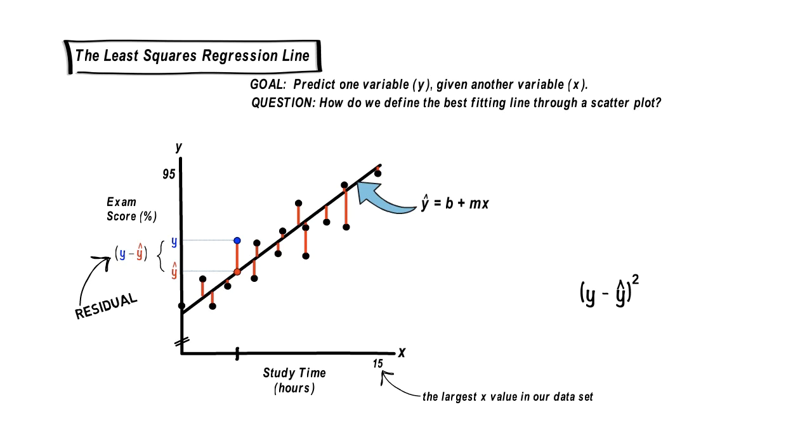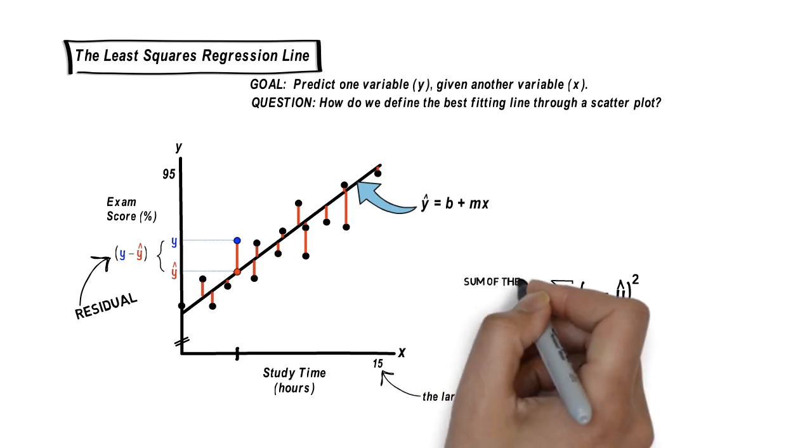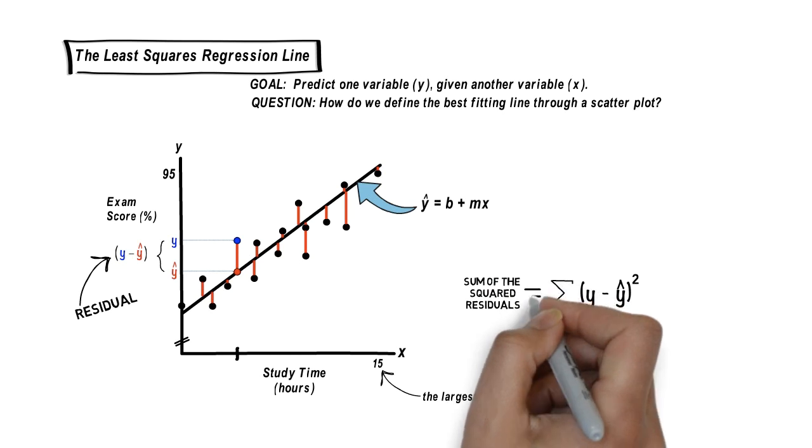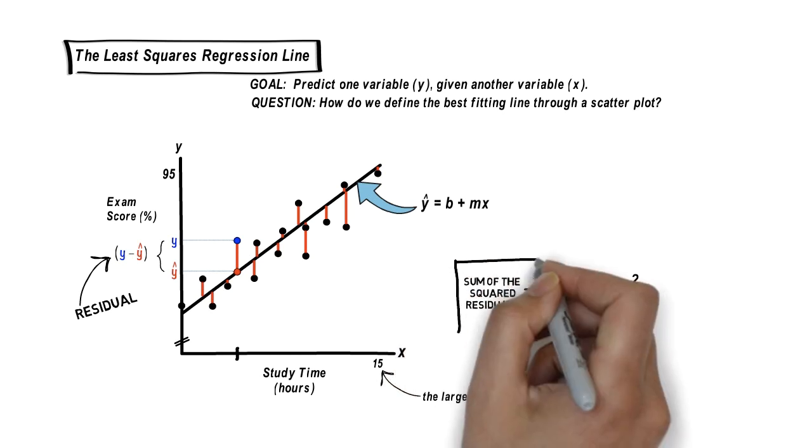OK, lastly, we're going to add up all our squared residual values to get one single, all-important, magical number. Let's call it the sum of the squared residuals, and we'll denote it by this notation here.